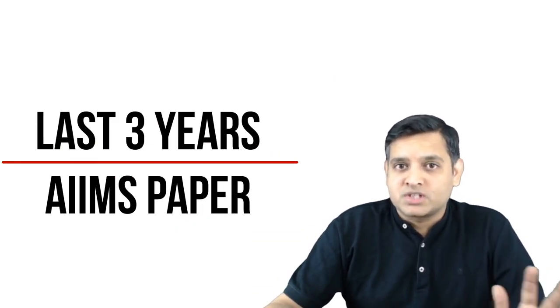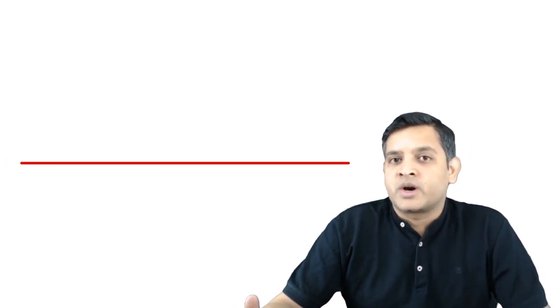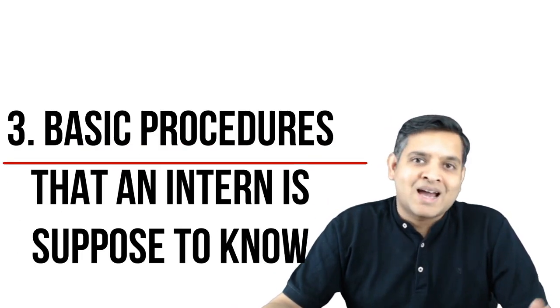So just to summarize, last three year AIIMS papers. So that means six papers, which include AIIMS as well as INICT. No need to spend too much time with the PGI paper, Jipmer paper, Nimhans paper. AIIMS is being given the responsibility, so it's usually the AIIMS kind of paper. Then any update. And the last very important point is common procedures and the equipment that an intern is supposed to do.